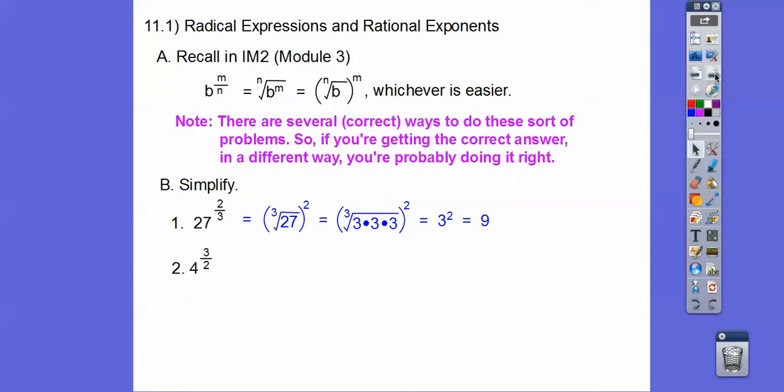How about this? 4 to the three-halves power. Now the square root of 4, it's understood if it's the square root of 4 that there's a 2 there when there's no number written there. So when this index number is a 2 right there, then we can just write the square root of 4. So this is going to be the square root of 4 to the third power right there. I'm just following this pattern right here.